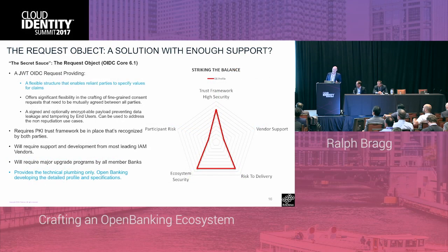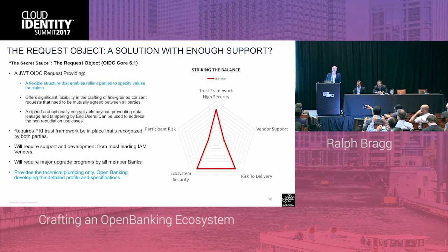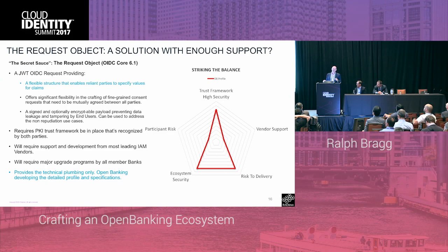What we decided upfront was that in order to meet the requirements, we had to have signed messages — signed non-reputable consent objects exchanged between all participants in the ecosystem. It turns out this feature has been available inside the OpenID Connect Core specification for almost two years. Unfortunately, it had a lack of vendor adoption because nobody was asking for it. The social media use cases were fine without high security, and this is one of the first implementations in a highly regulated environment where we've said we do need this specification.